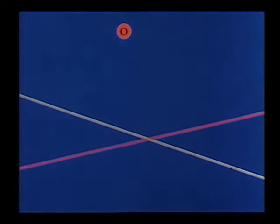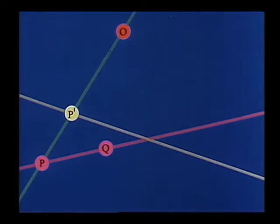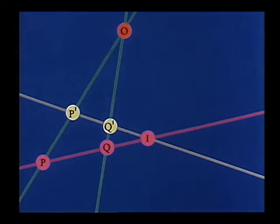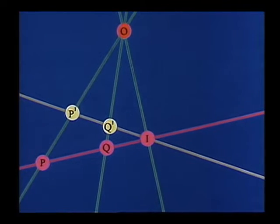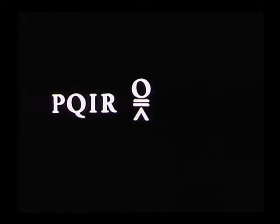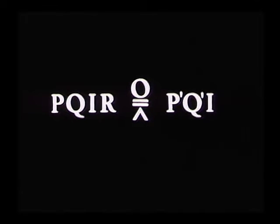If a perspectivity maps P onto P prime, Q onto Q prime, I onto I, R onto R prime, and so on, then P, Q, I, R are said to be perspective from center O with P prime, Q prime, I, and R prime.